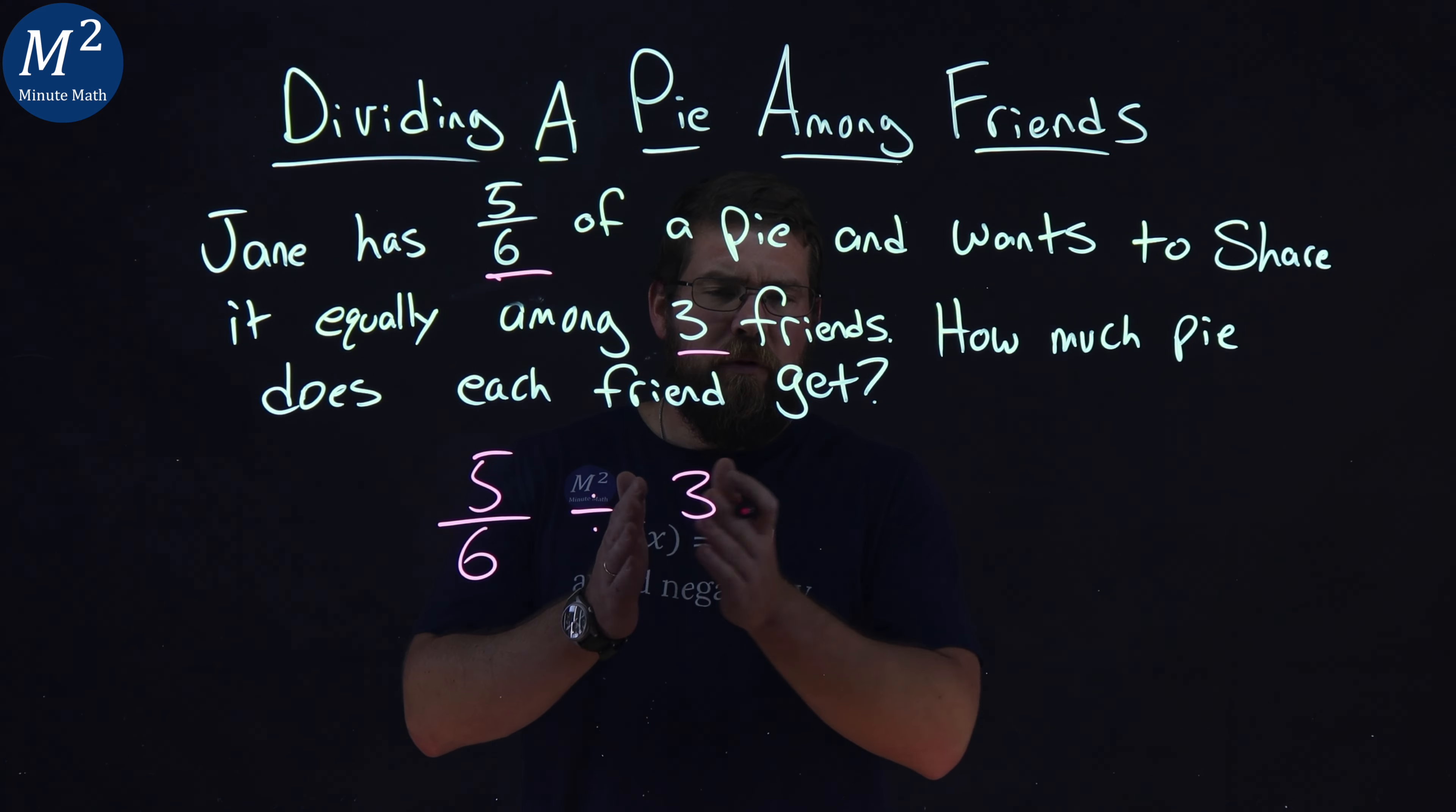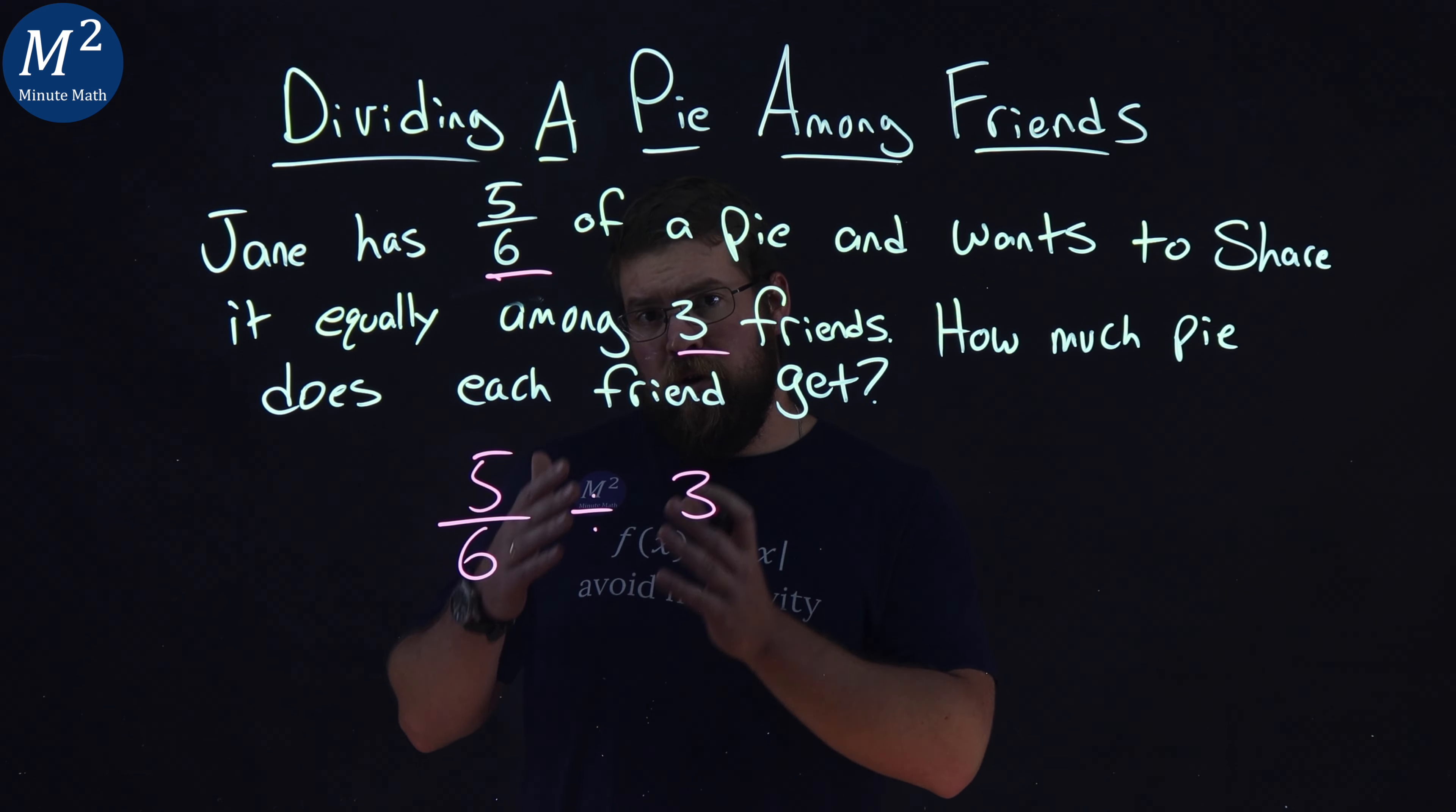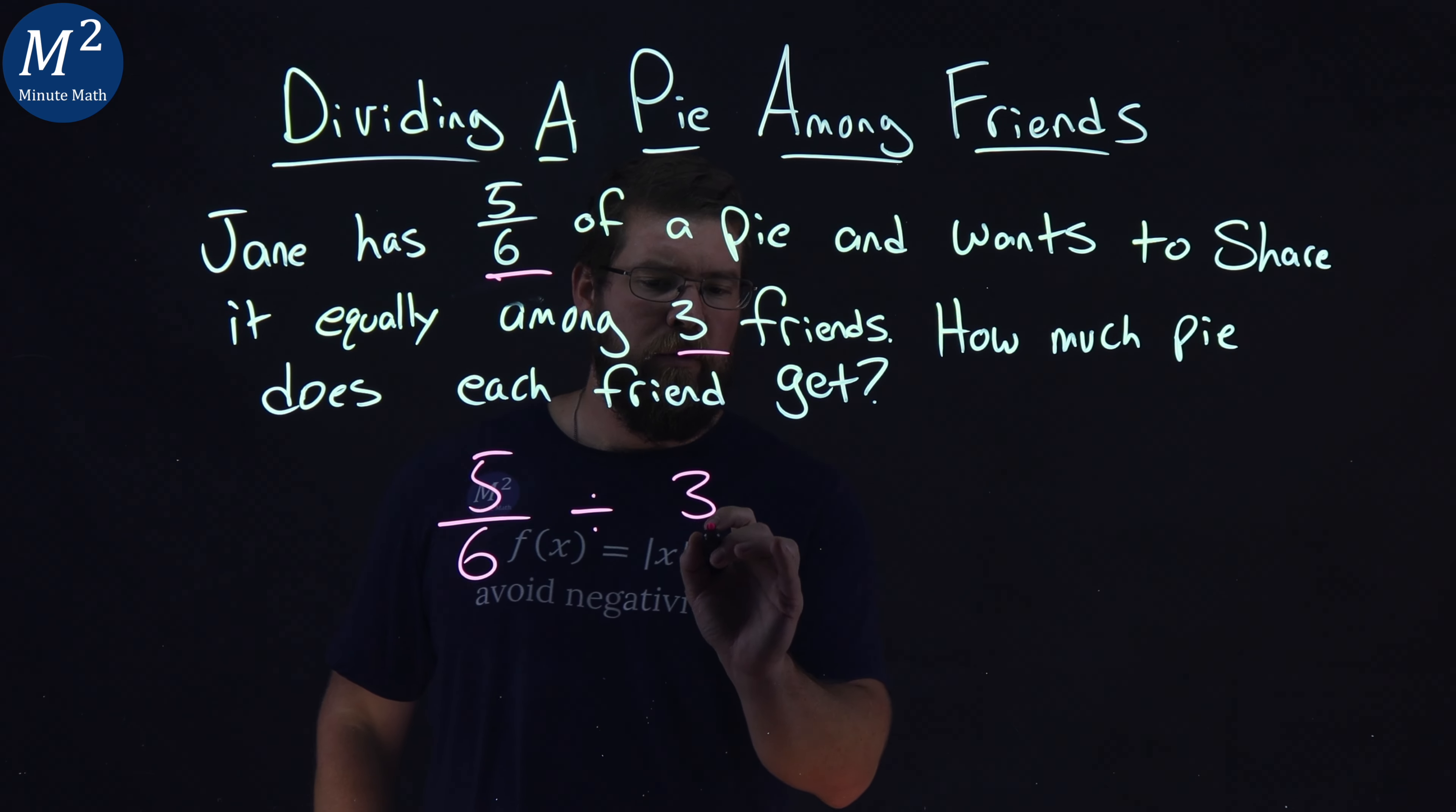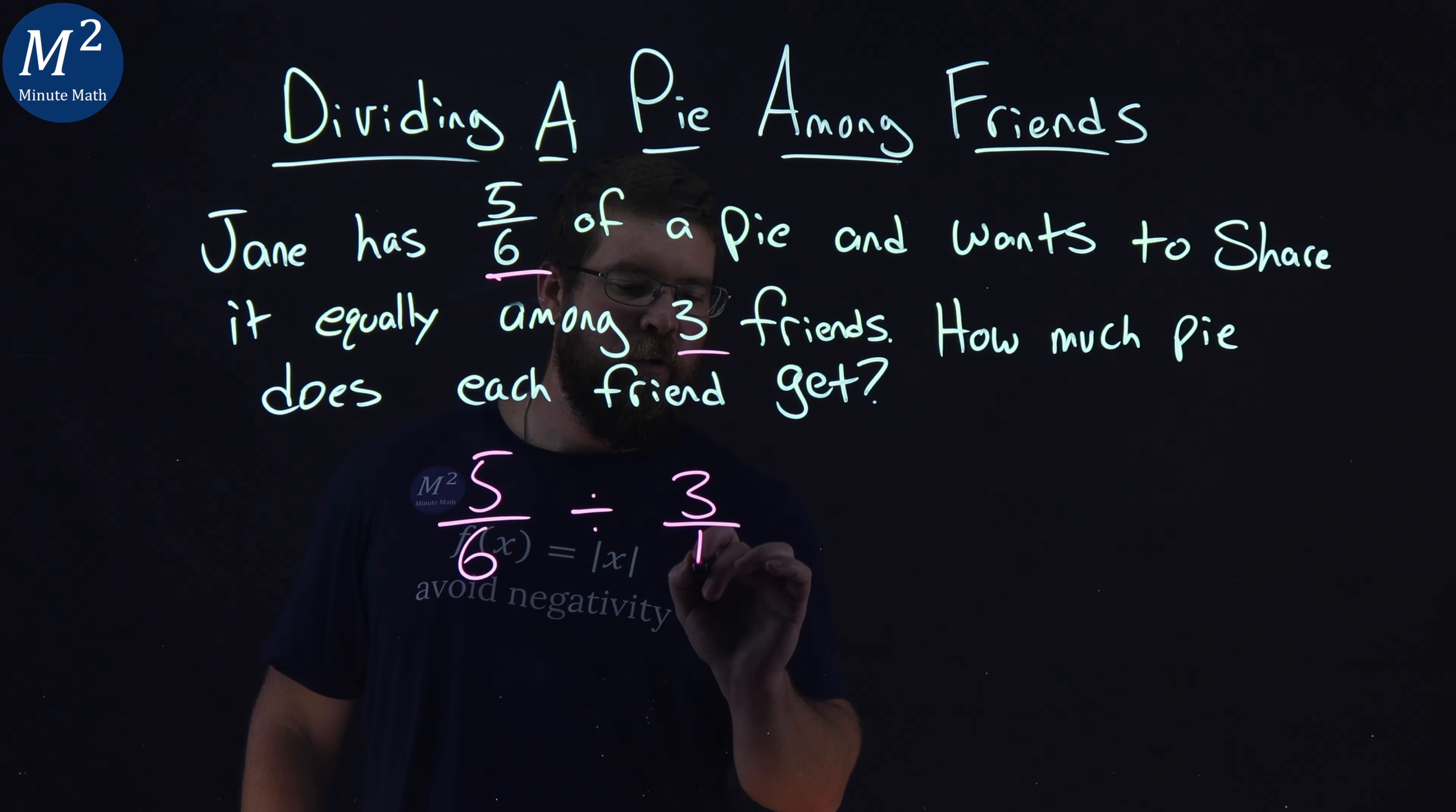So to do this, we want to rewrite this as a multiplication of a fraction. Remember, three is the same as three over one.